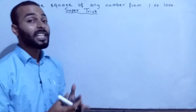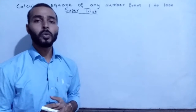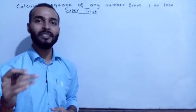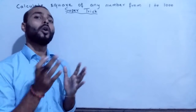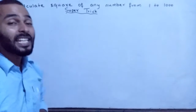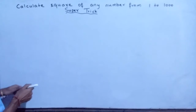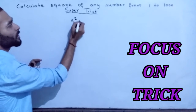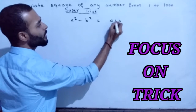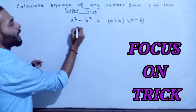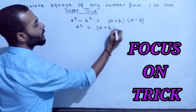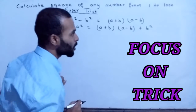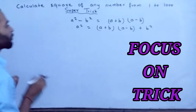Now let's look at how to calculate the square of any number from 1 to 1000. In the previous video I taught you to calculate the square of a two-digit number using another method — that video is linked in the description. This is another trick based on the algebraic formula: a² = (a+b)(a-b) + b². Our trick is based on this formula.